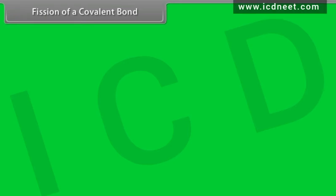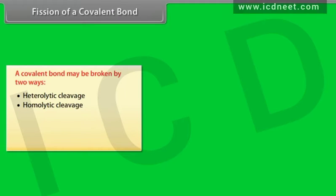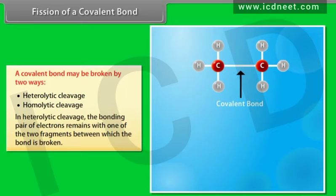Fission of a covalent bond: a covalent bond may be broken by two ways — heterolytic cleavage and homolytic cleavage. In heterolytic cleavage, the bonding pair of electrons remains with one of the two fragments between which the bond is broken.